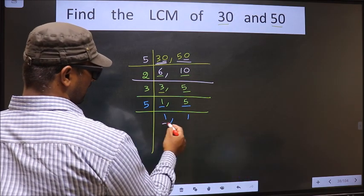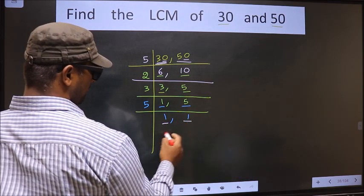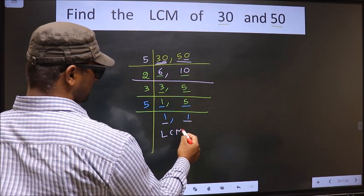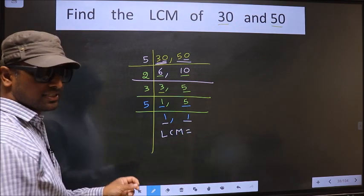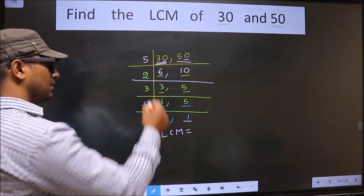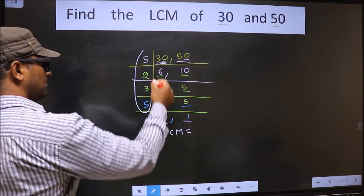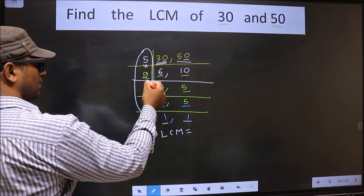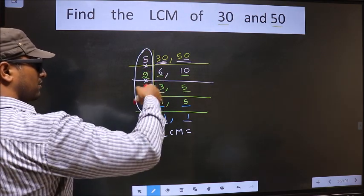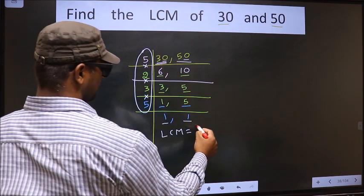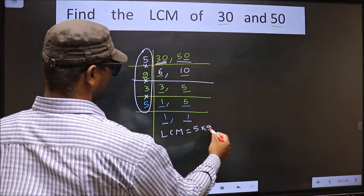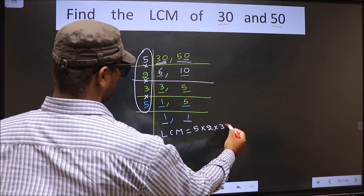We got 1 in both the places, so our LCM is, LCM is the product of these numbers. Product of these numbers, that is 5 into 2, into 3, into 5.